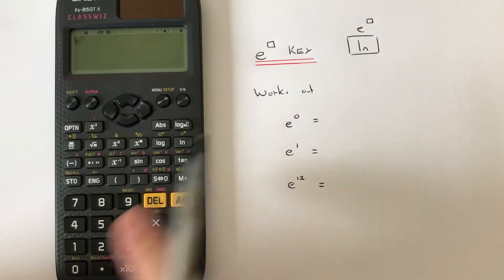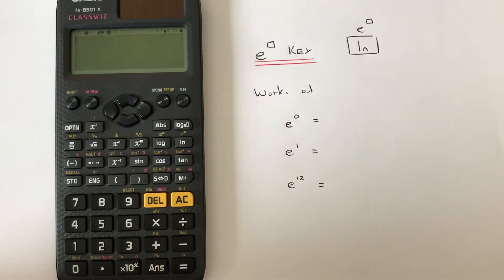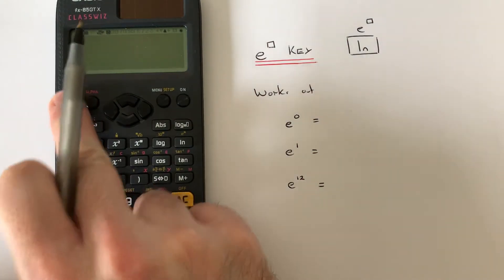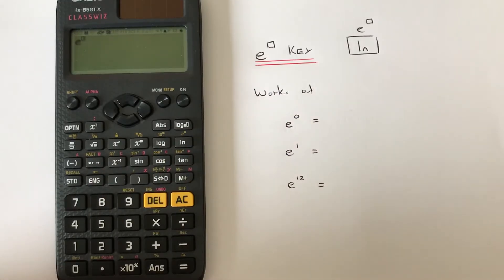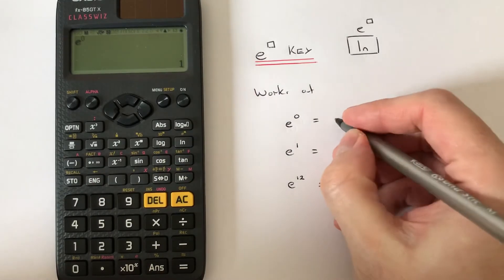Okay, so let's have a look at the examples here. We've got to work out e raised to the power of 0. So if we press shift ln and then press 0, hit the equals, and we get the answer of 1.